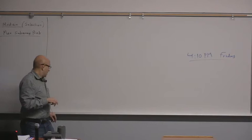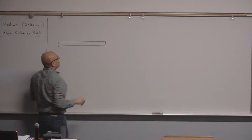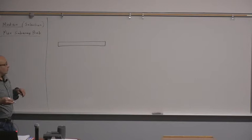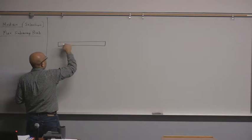The median algorithm we discussed last time: the idea is you start with an array, you partition it like quicksort. When you partition using the quicksort-type partitioning, the pivot will end up somewhere in the array. It could be here, here, anywhere — it's not necessarily in the middle.